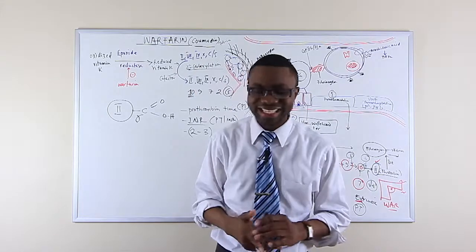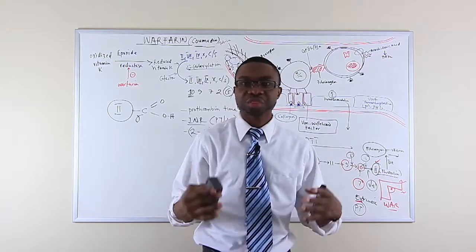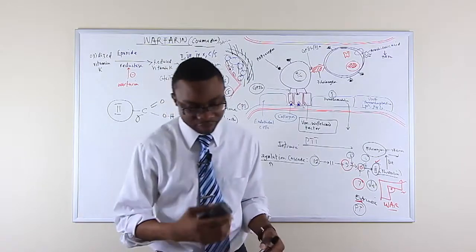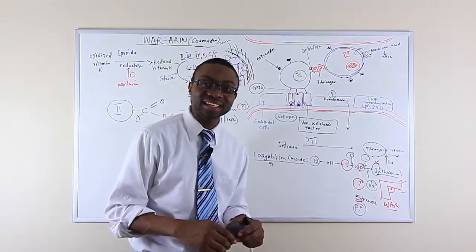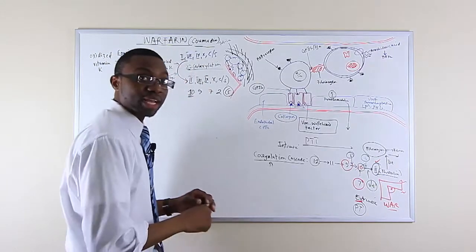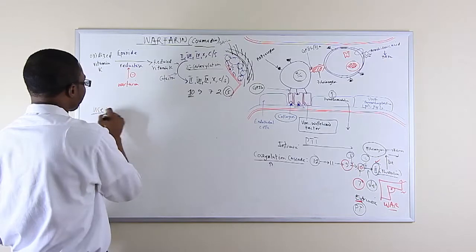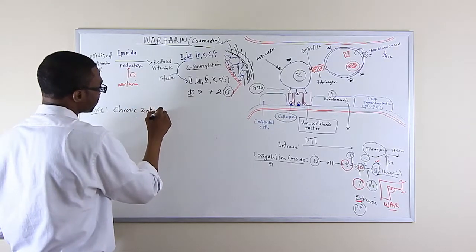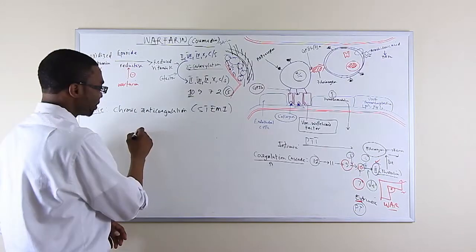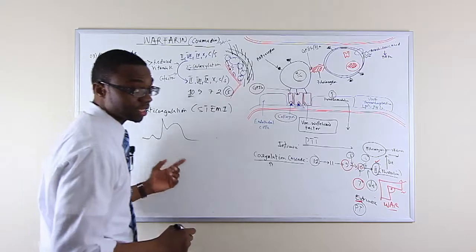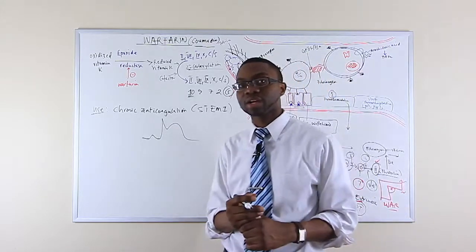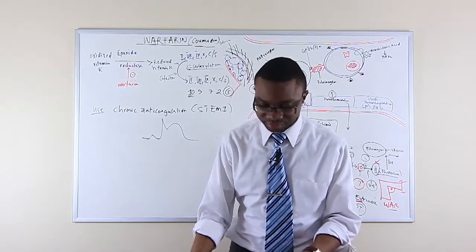What do we use warfarin for? What is the clinical use of warfarin? We're trying to thin out the blood so they don't clot. So we're going to use it for symptoms that cause clotting in the body. The first one is we use it after an ST elevation myocardial infarction, which is known as STEMI. We use it for chronic anticoagulation in a patient that has ST elevation myocardial infarction. So a patient came in and you see this on the EKG, oh my God, you're having a myocardial infarction. After you're done treating the patient, they have to be on Coumadin.